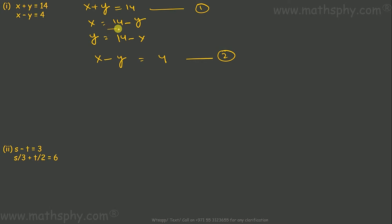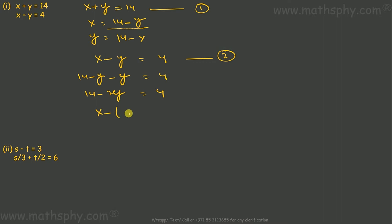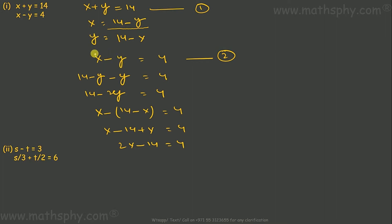In this equation, the value for X is 14 minus Y. I'll replace X with 14 minus Y in the second equation: 14 minus Y minus Y equals 4, which gives 14 minus 2Y equals 4. Similarly, I can replace Y with 14 minus X in the same equation: X minus (14 minus X) equals 4, so X minus 14 plus X equals 4, giving 2X minus 14 equals 4. So from the first equation I have both values — value for X and value for Y — which I can replace into equation number 2.